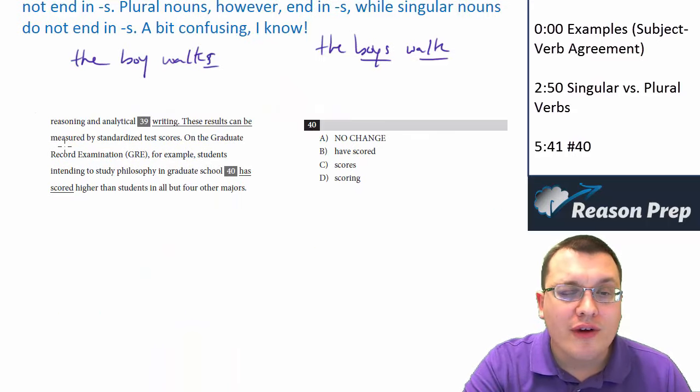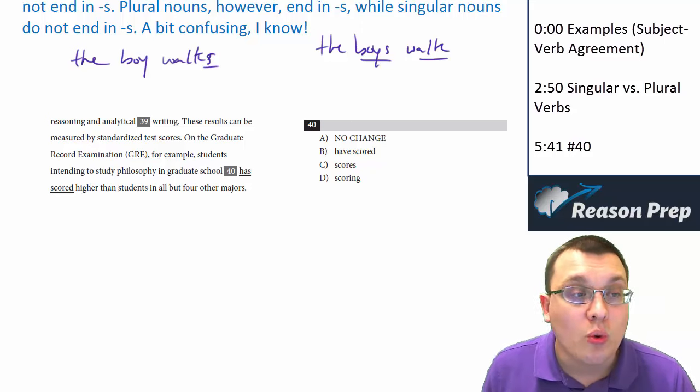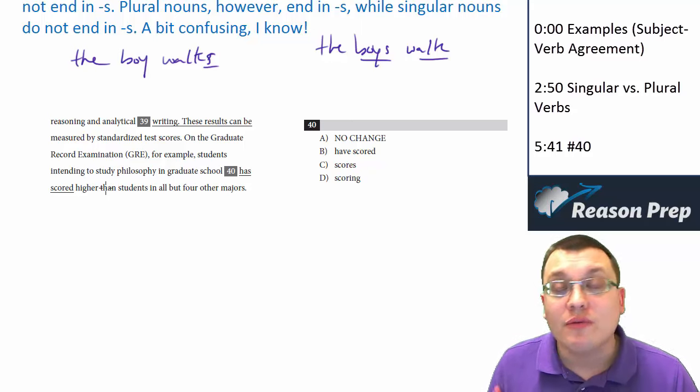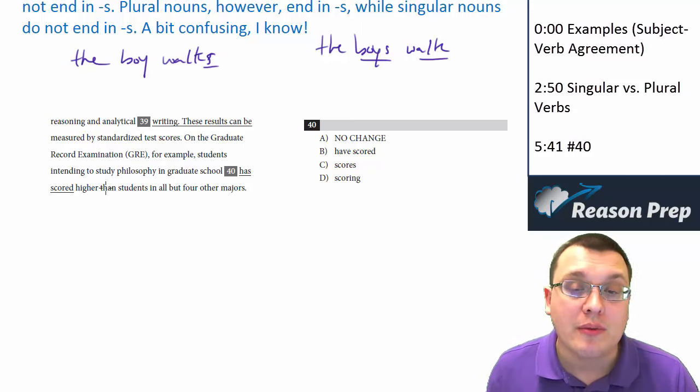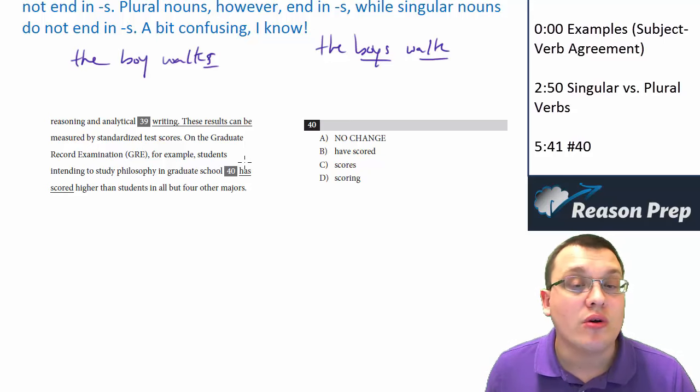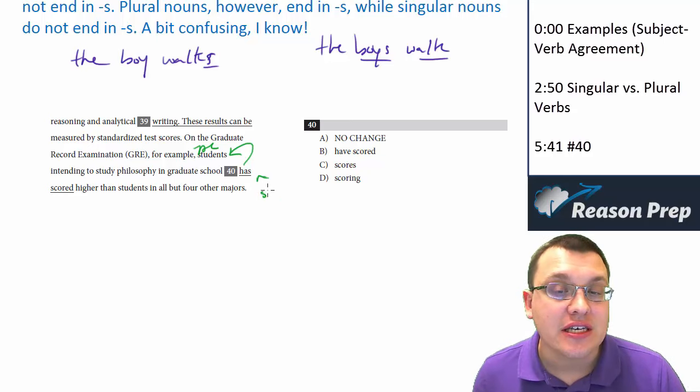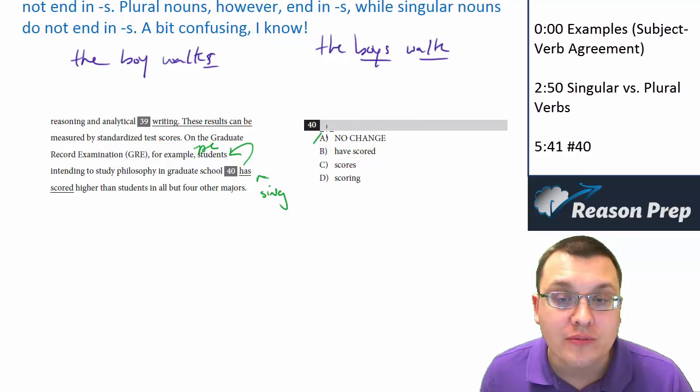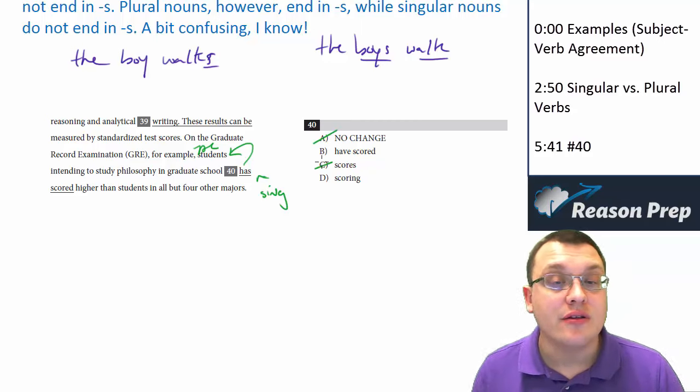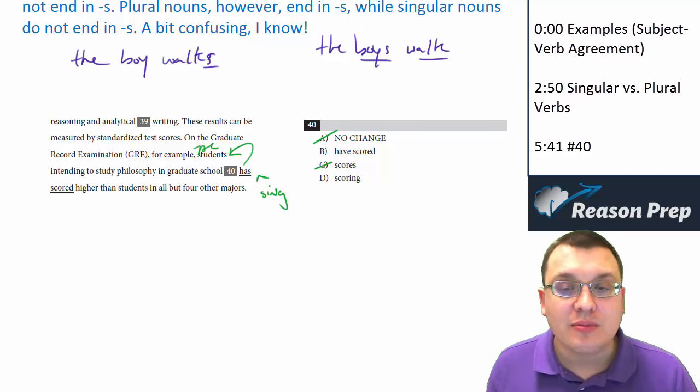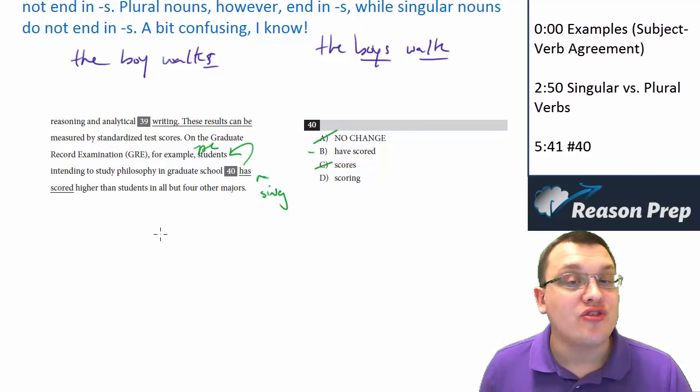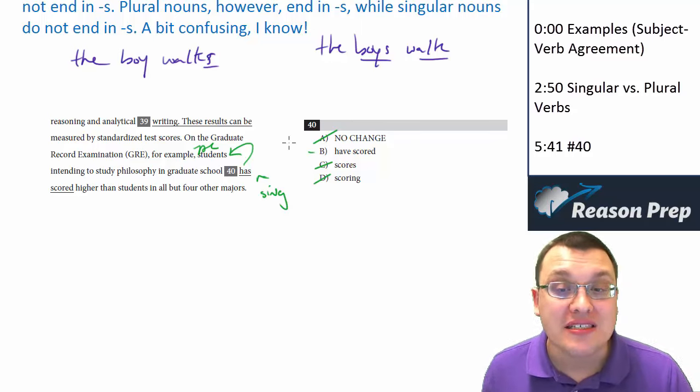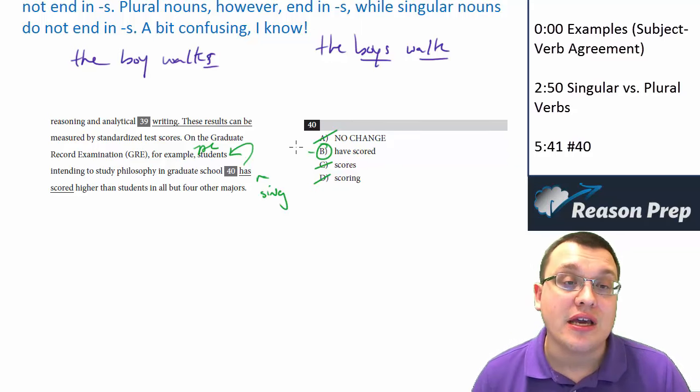Let's look at an example. On the graduate record examination, GRE, for example, students intending to study philosophy in graduate school has scored higher than students in all but four other majors. So what is the subject of this verb has scored? Whenever you see a verb, you must immediately think, is this subject verb agreement? What is the subject? The subject, who is it that has scored higher? It's students. Students is plural. Has scored is actually singular. So we need to get rid of all the singular verbs, which would be A and C. Scores is also singular. The students score, for example. Have scored is the plural form of this, so that looks pretty good. D doesn't even make it a verb anymore, makes it a fragment with that ing. So the only one that's going to work is B.